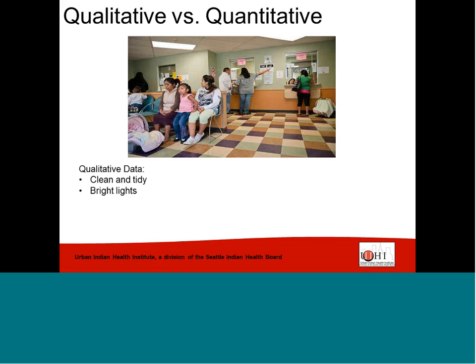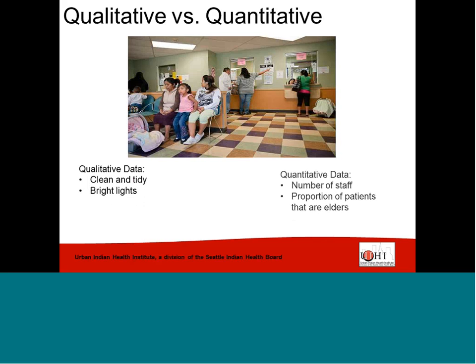In contrast, quantitative methods measure quantity and collect data that can be counted or expressed numerically. Quantitative data is usually reported in the form of rates, proportions, and percentages. Some examples of quantitative measures could include the number of staff present, the proportion of elder users, or the number of chairs in the room. Both qualitative and quantitative methods provide information that can be used to learn more about people's knowledge, perceptions, attitudes, and beliefs. Both methods can also be used to assess the process and outcomes of programs, interventions, or services.